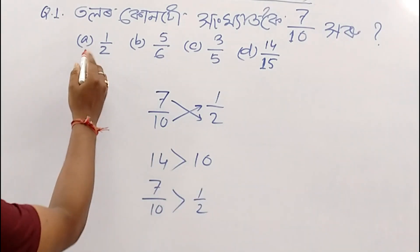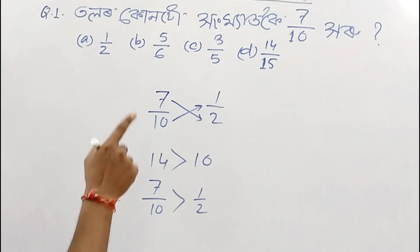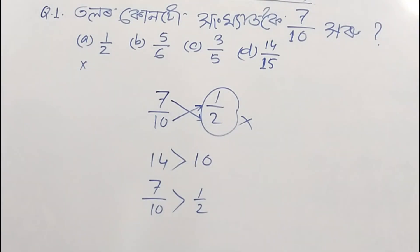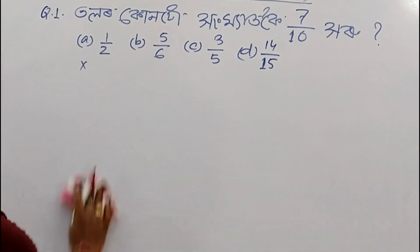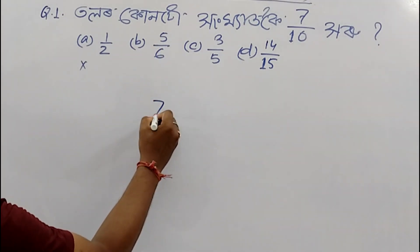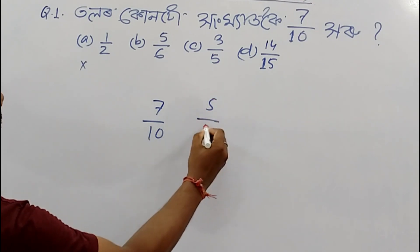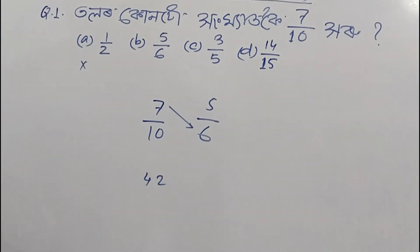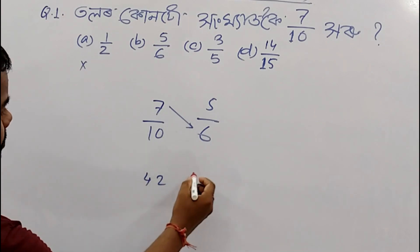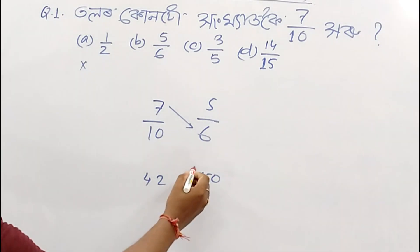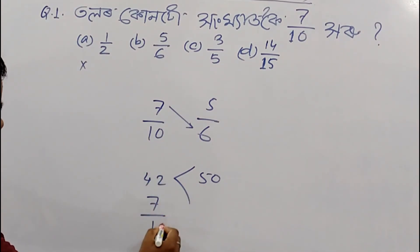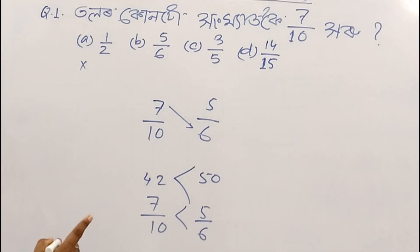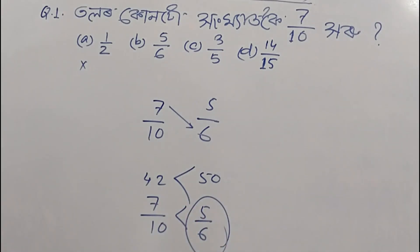7 times 10 is the first fraction. We say 7 by 10 is the first fraction. The first option is cancel. Second option is 5 by 6. So 7 by 10 compared to 5 by 6. Second option is 4 by 6. This option is equal to 7 by 10. First option is 7 by 10.